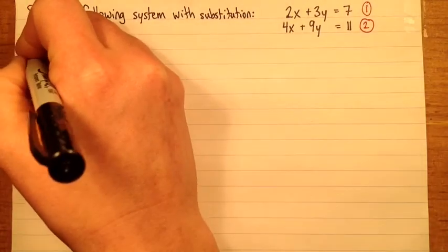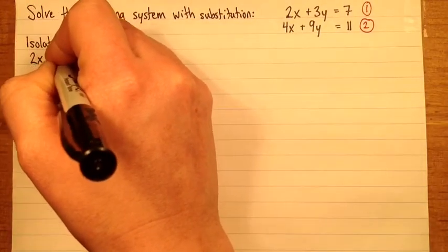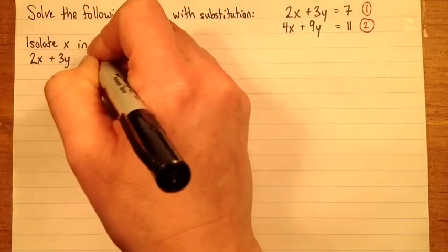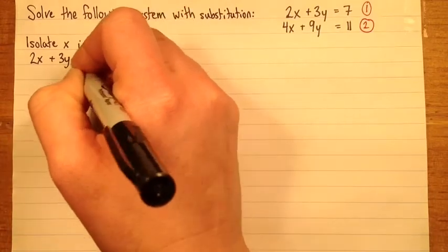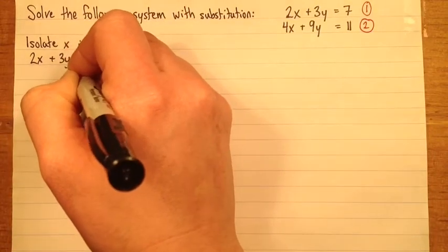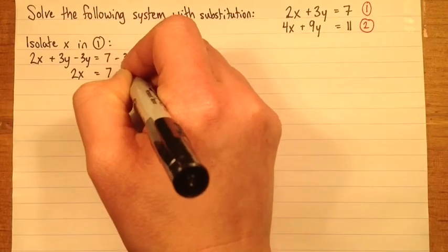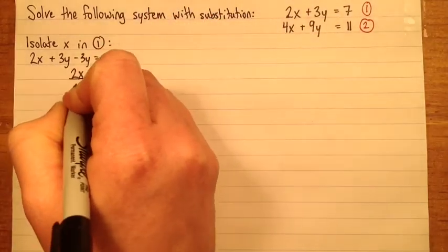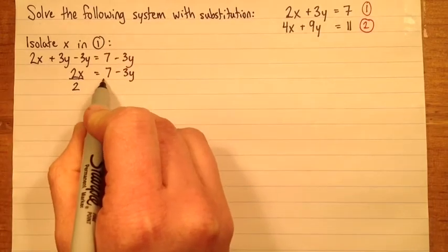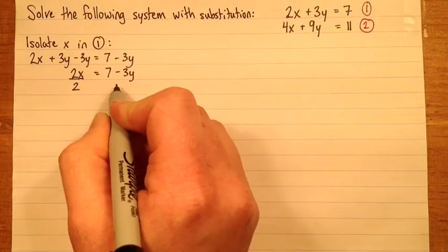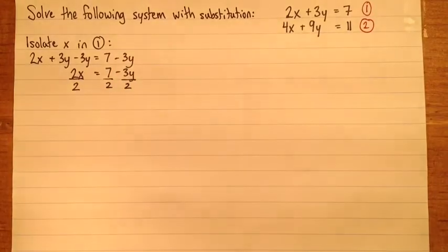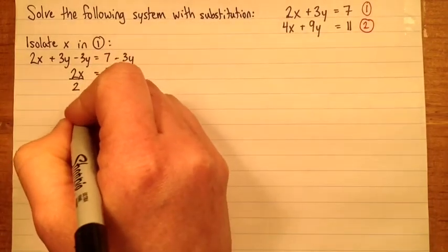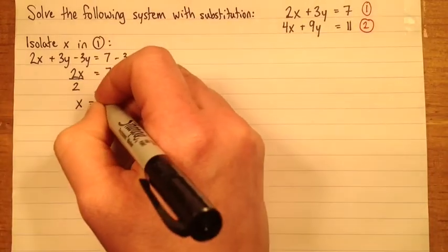So equation 1 was 2x plus 3y equals 7. So I'll subtract 3y from both sides. So I have 2x equals 7 minus 3y. And then I'll divide both sides by 2. So you can write that you're dividing the whole right side by 2, but people seem to find it a little bit easier if you divide each term separately. It's the same thing, but this makes it more obvious what to write next.